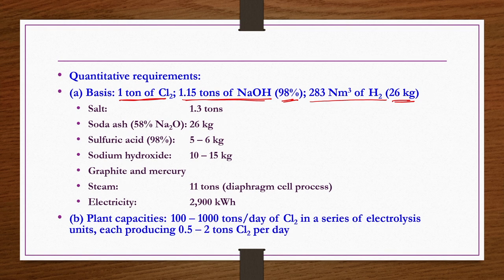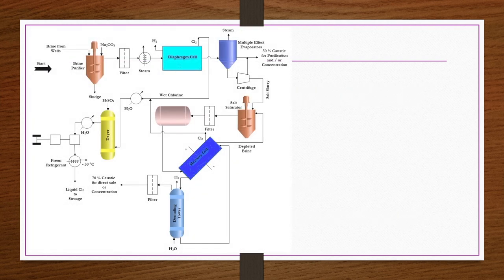Plant capacity is usually 100 to 1000 tons per day of chlorine in a series of electrolysis units. There may be 200 to 500 units in general, because each unit produces 0.5 to 2 tons of Cl2 per day.